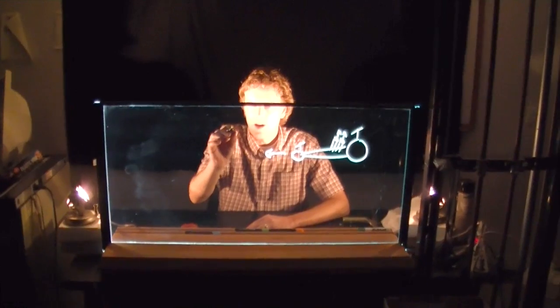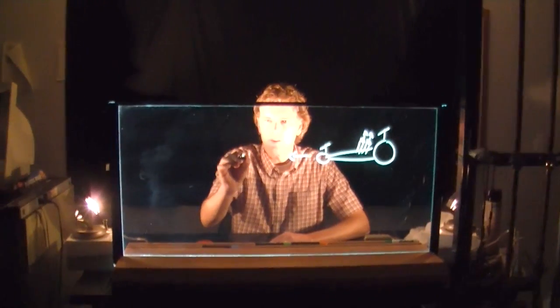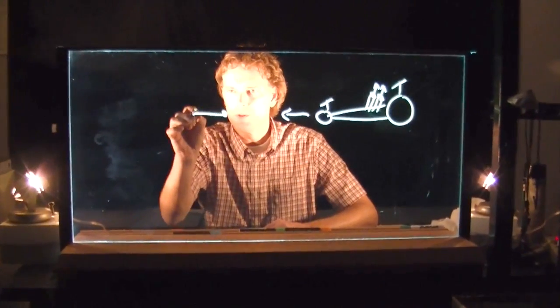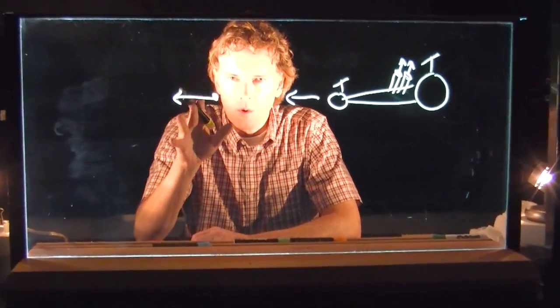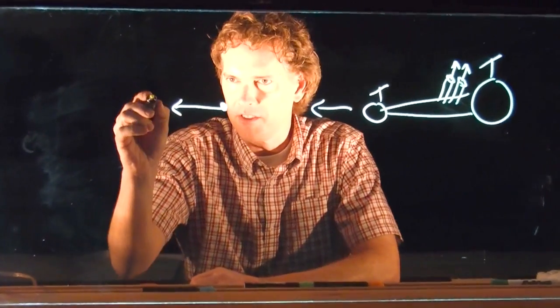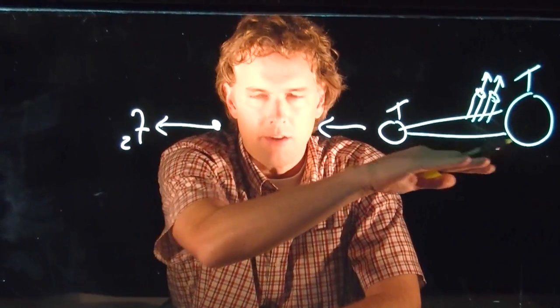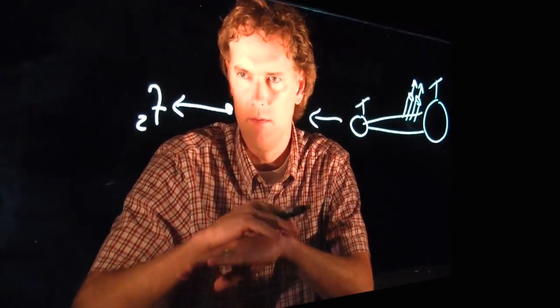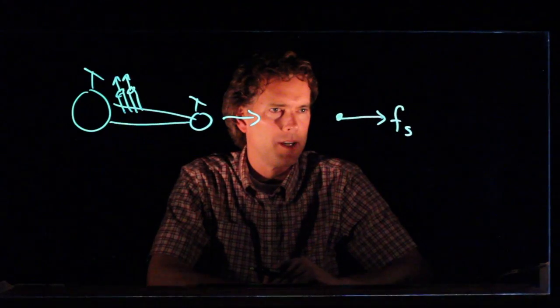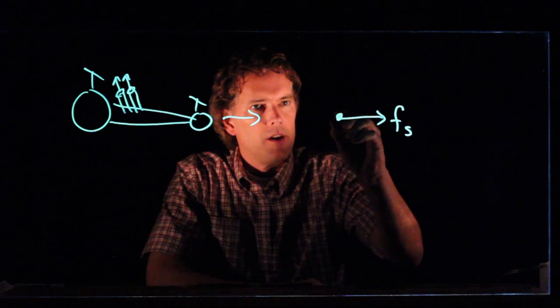If I think about the forces in the x direction, let's draw our free body diagram, which we said is just a dot. The only thing propelling them down the track is the static friction between the tires and the track. Lose the static friction, they don't accelerate down the track.